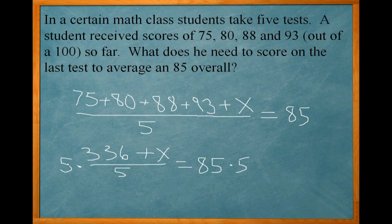So I multiply both sides by 5 and it ends up canceling out the 5 on the bottom, leaving me with 336 plus X equals 85 times 5. That's equal to 425.